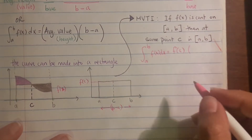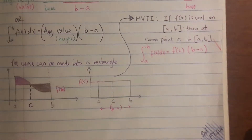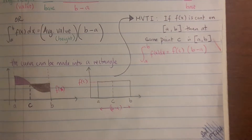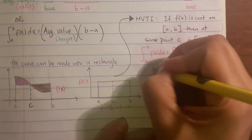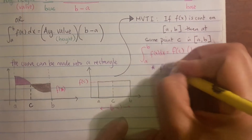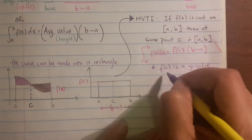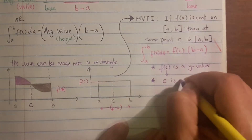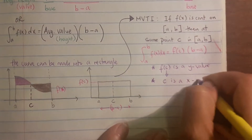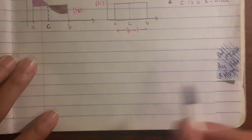That's what the Mean Value Theorem says: at some point c, the area underneath the curve equals the average value — the average height — times the base. Important things to remember: f(c) is a y-value, not an x-value, and c inside the function is the x-value. You need to know that distinction because those will be the questions.